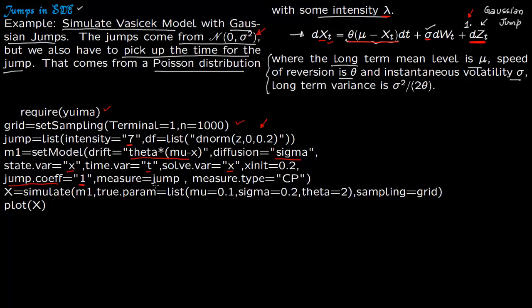So measure is jump. You have intensity of 7 and you are taking the jump from a normal distribution. So jump has two things. You know when you will jump, that is coming from Poisson distribution. That is intensity. And how big your jump is going to be, and that is Gaussian. So your measure is jump. Measure type is CP means compound Poisson, because you are taking from Poisson distribution.